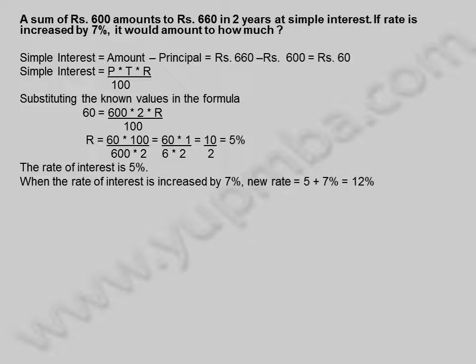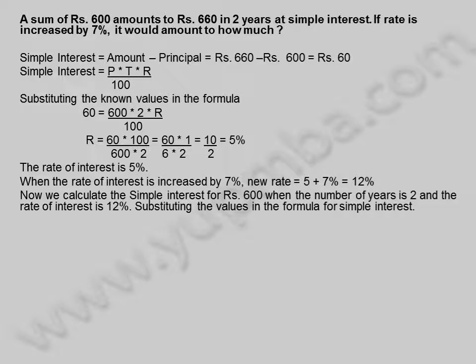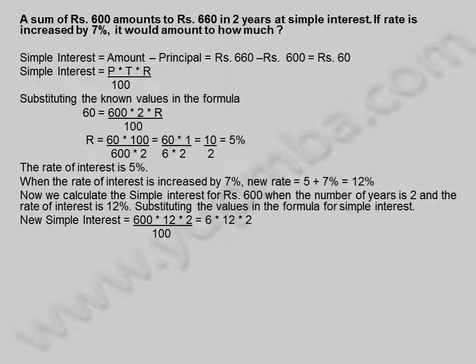When the rate of interest is increased by 7%, the new rate equals 5 plus 7, which is 12%. Now we calculate the simple interest for 600 rupees when the number of years is 2 and the rate of interest is 12%. New simple interest equals 600 into 2 into 12 divided by 100, equal to 144 rupees.